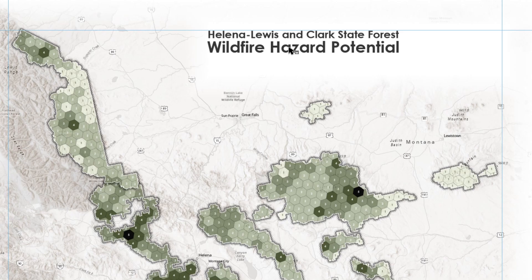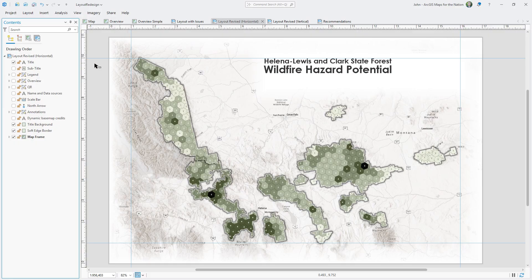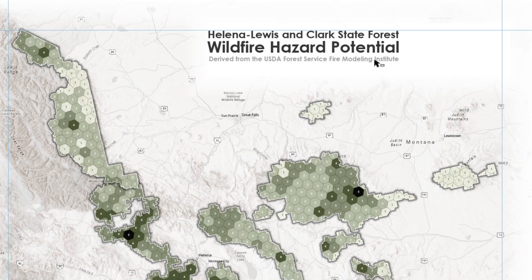A title should be just a handful of words — you can see it from across the room and know what it's about. Secondary information like the map's location can be used to prefix the title, but it's tier-2 content and should visually look tier-2. I've included information about the data's source as a subtitle because I thought it was important, but subtitles are visually reduced.